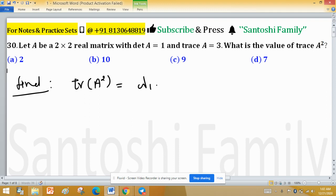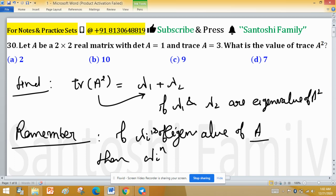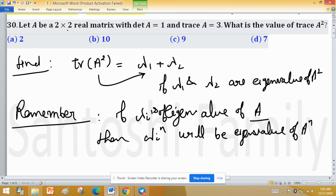That is, if lambda 1 and lambda 2 are eigenvalues of A, then trace of A squared equals lambda 1 squared plus lambda 2 squared. Remember one point to solve this problem: if lambda i is an eigenvalue of matrix A, then lambda i raised to the power n will be an eigenvalue of A raised to the power n. Use this concept and try to solve this problem.